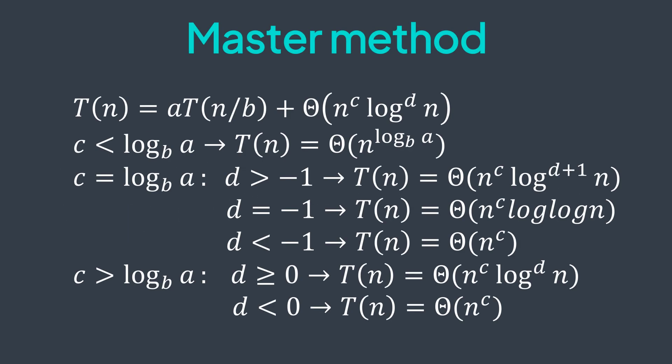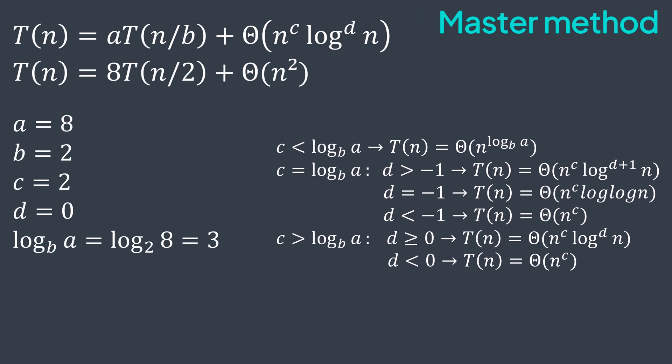By applying the master method, we get a equal to eight, b equal to two, c equal to two, and d equal to zero. log_b of a is log_2 of 8, which is equal to 3, which is greater than c. So T(n) is in theta of n power log_b of a, which is theta of n cubed. Our algorithm has a time complexity of theta of n cubed. But wait, the brute force solution also had the theta of n cubed complexity. Why would we use the Strassen's algorithm that can even be slower than brute force because of recursion and other stuff?